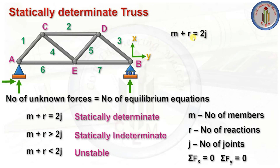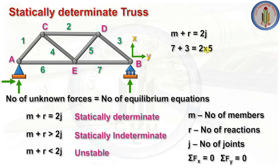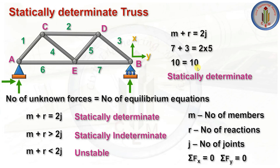So we check: m + r = 2j. We have 7 members plus 3 reactions = 10. The number of joints is 5, so 2 × 5 = 10. Since 10 = 10, the condition is satisfied. This truss is a statically determinate truss.